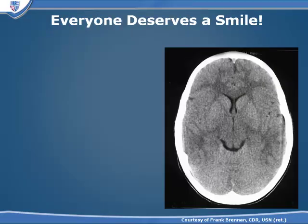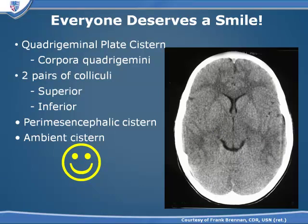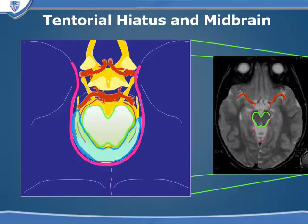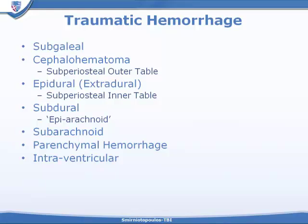We also consider that everyone deserves a smile. The smile is the cistern behind the upper portion of the brainstem, the quadrigeminal plate, and this is another area to look for midline shift or herniation. If you don't see visible cerebrospinal fluid either in the quadrigeminal plate cistern or in the supracellar cistern, respectively behind and in front of the brainstem, this may be because the patient has brain swelling or has central herniation without any lateralization or midline shift.